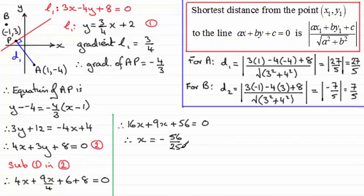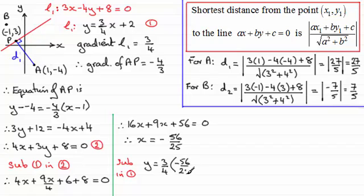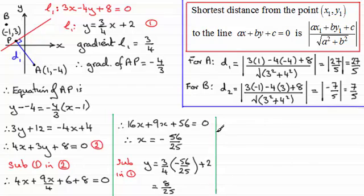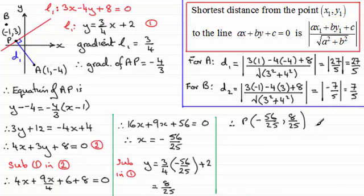To get the y-coordinate of P, I substitute x = −56/25 into equation 1: y = (3/4)(−56/25) + 2, which gives y = 8/25. So the coordinates of P are (−56/25, 8/25).